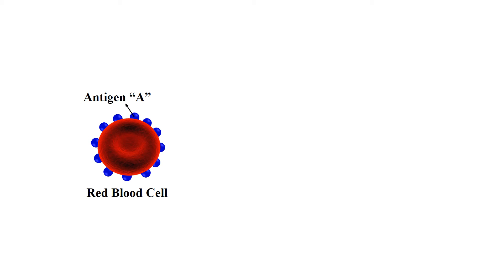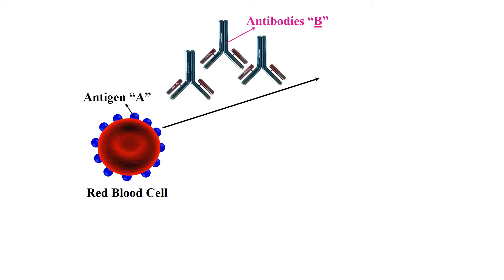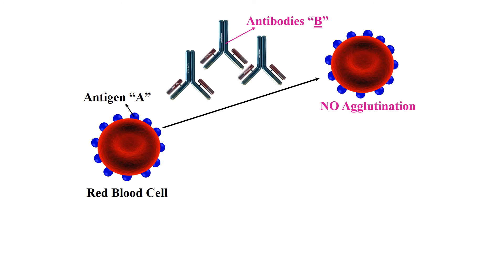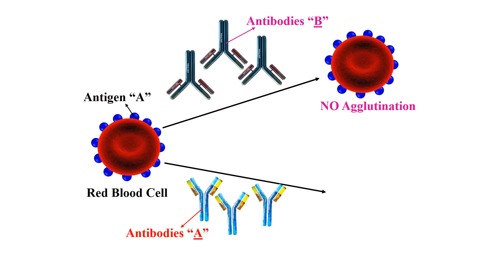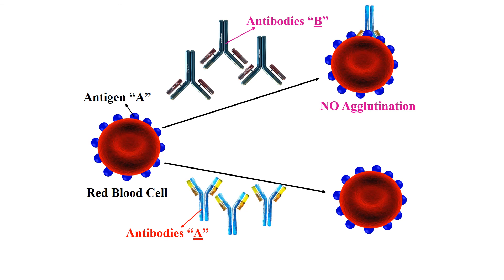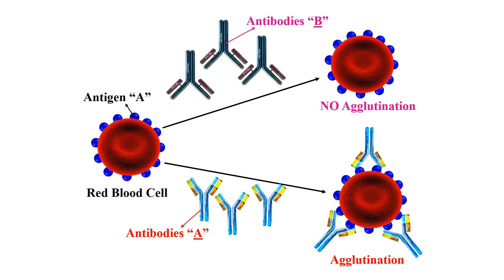In this slide, hemagglutination is shown more clearly. For example, this RBC has blue dots representing antigen A present on its surface. When we add antibody B to this solution, there will be no agglutination — because antigen A is present but antibody B only reacts with antigen B. To produce agglutination, we must add antibody A, since antibody A is directed against antigen A. When antibody A interacts with antigen A, the interaction results in visible agglutination. This antigen is particulate in nature, which is why we call it an agglutination reaction.